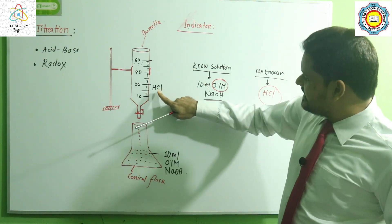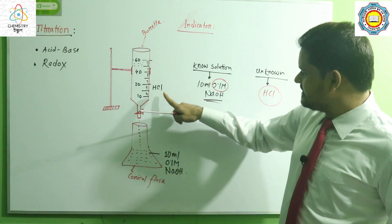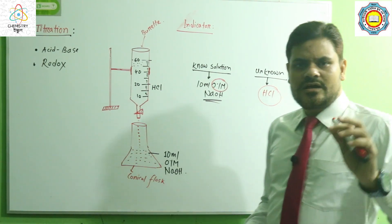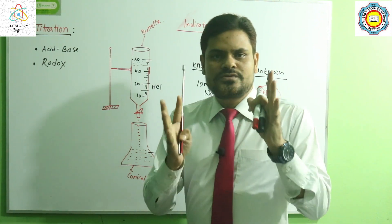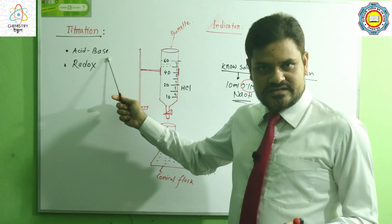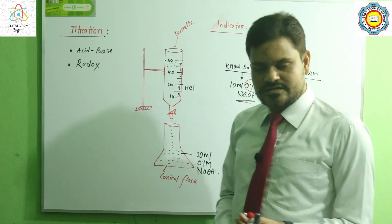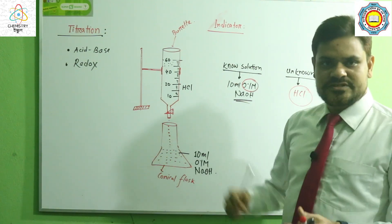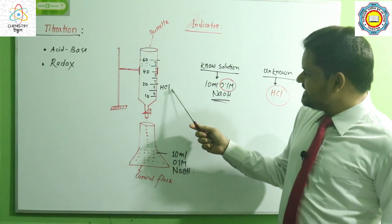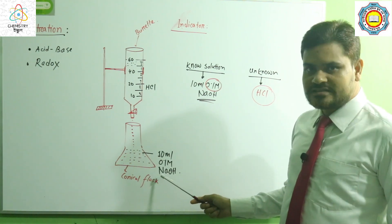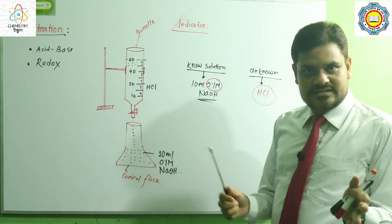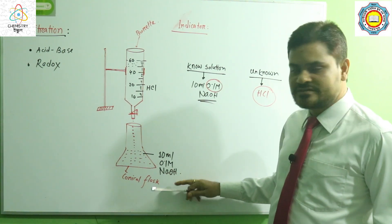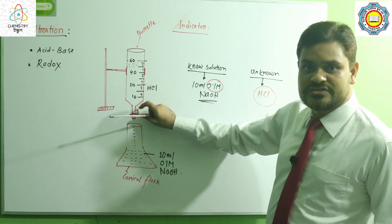When we add HCl to this solution, the acid and base react with each other. This is a titration between an acid and a base. We have mainly two types of titration: acid-base titration and redox titration. Now I am talking about acid-base titration. When the acid comes into the conical flask, the acid and base react and neutralize. When neutralization is complete, we stop the screw.